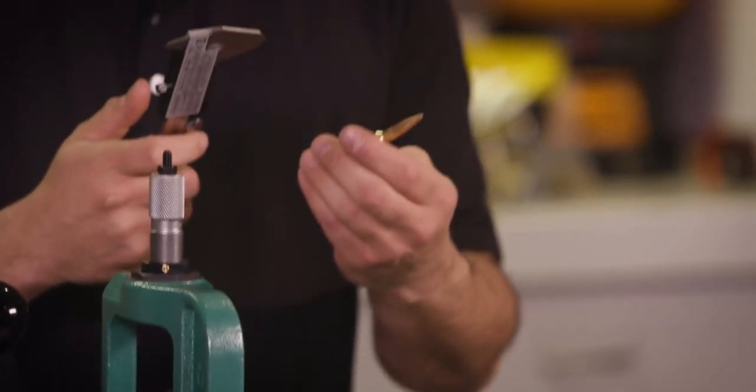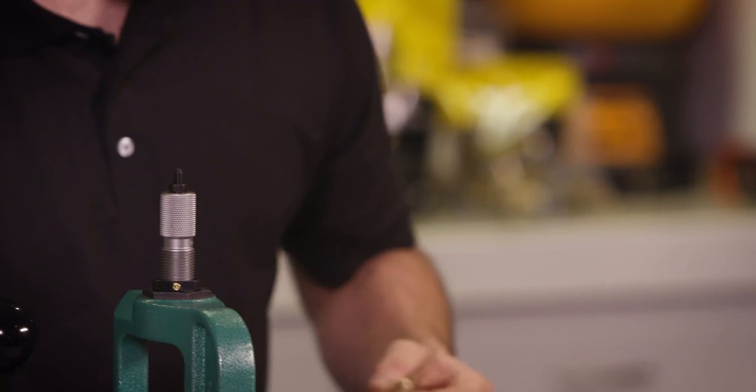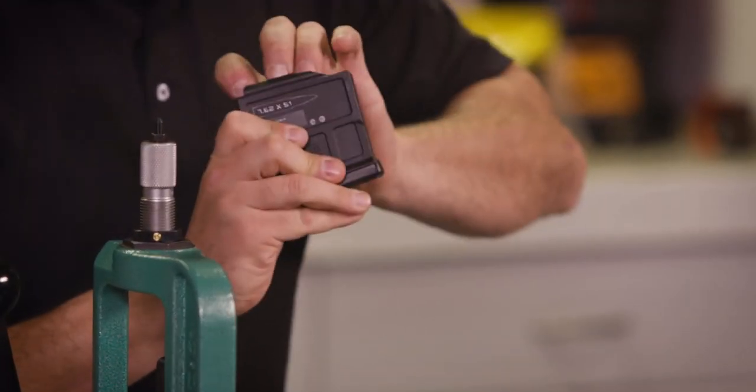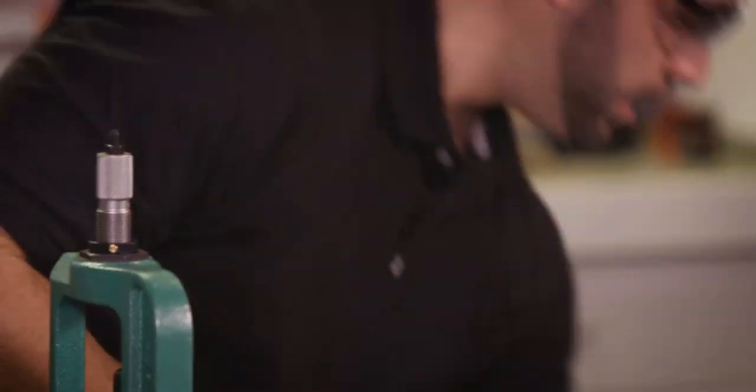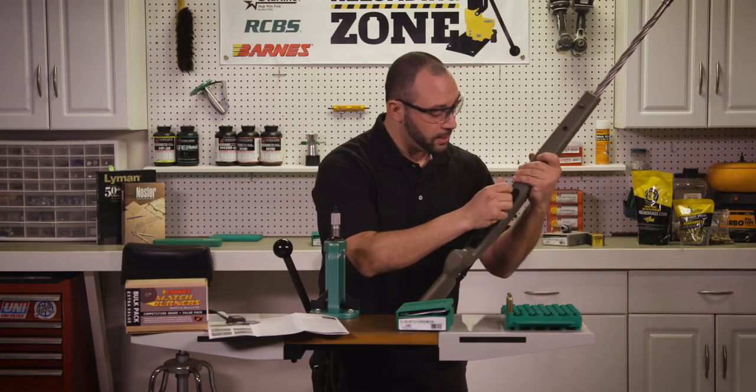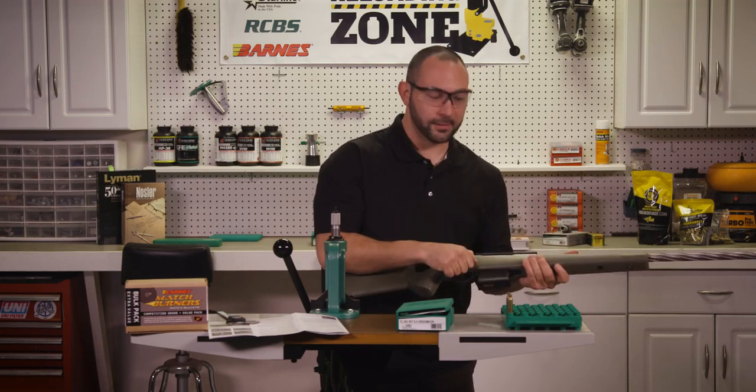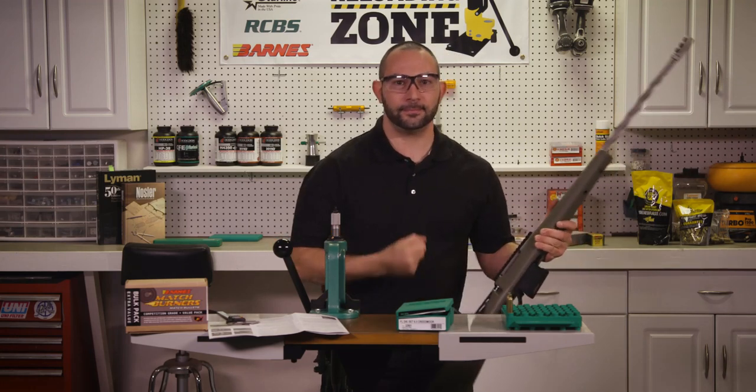Now that we've achieved our target overall length, it's time to make sure that it fits inside of the magazine. And it does. And then, of course, you want to make sure it also chambers into the gun. Excellent. Now that you've made a dummy round, you confirm that it's going to cycle through the firearm, no problem. It's the exact same process with your cases that have primer and powder. Just be careful not to spill any.